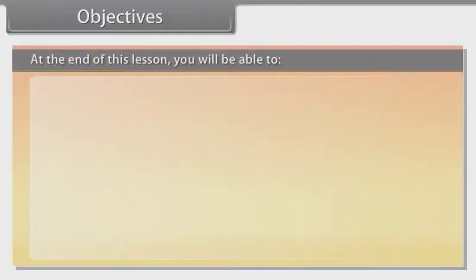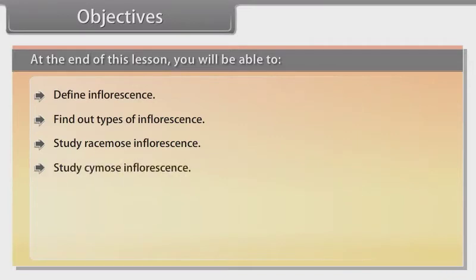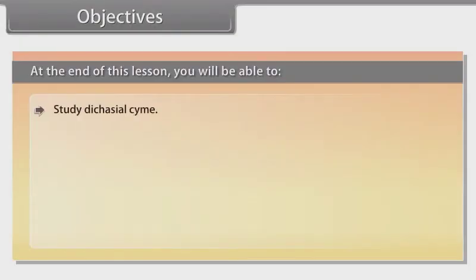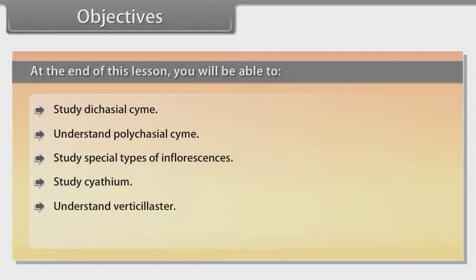At the end of this lesson you will be able to: define inflorescence, find out types of inflorescence, study racemose inflorescence, study cymose inflorescence, understand types of cymose inflorescence, study solitary cyme, understand monochasial cyme, study dichasial cyme, understand polychasial cyme, study special types of inflorescences including cyathium, verticillaster, and hypanthodium.